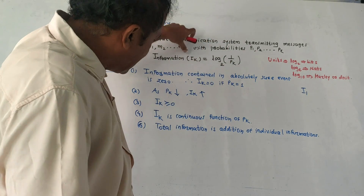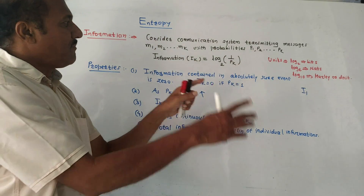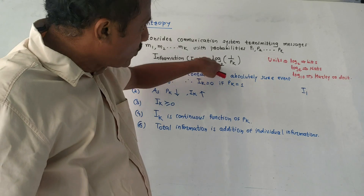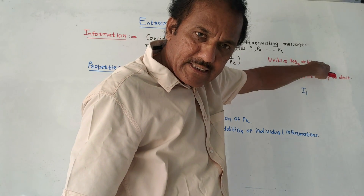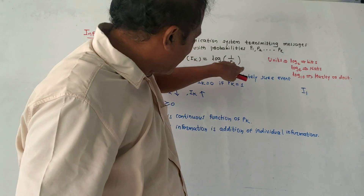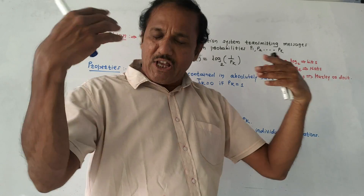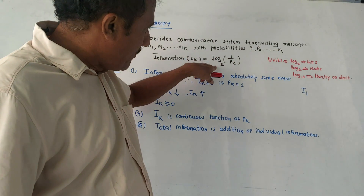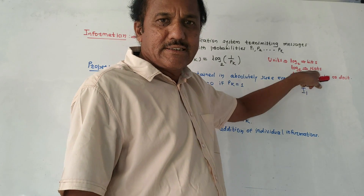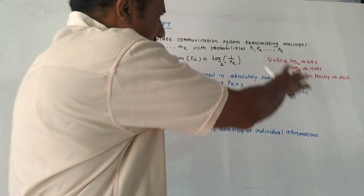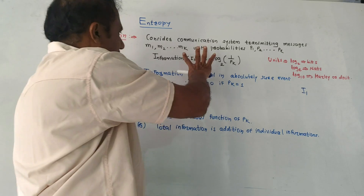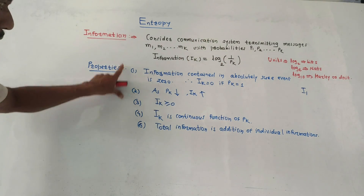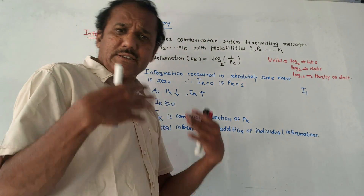The unit of information depends on the base of the logarithm. If base is 2, the unit is bits. If base is e (natural log), the unit is nats. If base is 10, the unit is hartley or decit. These are the different units associated with the term information.